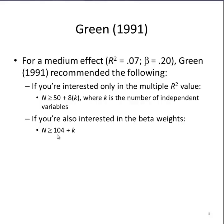So for each additional independent variable, add one case. But the minimum you need to conduct a multiple regression, according to Green, with medium effect size, and you're interested in beta weights, which almost everyone is, is 104.